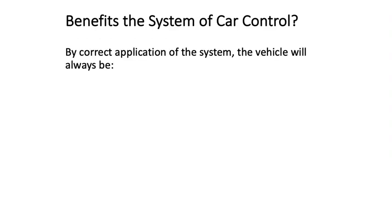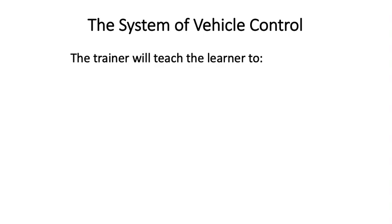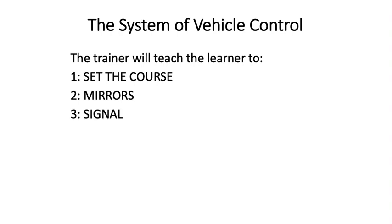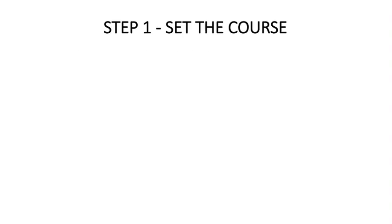The benefits of the system of car control: by correct application of the system, the vehicle will always be in the correct place on the road, travelling at the correct speed, with the correct gear engaged. The trainer will teach the learner the six steps: 1. Set the course. 2. Mirror check. 3. Signal. 4. Brake and position. 5. Gears and mirrors. 6. Evasive action. Let's break these steps down one at a time.